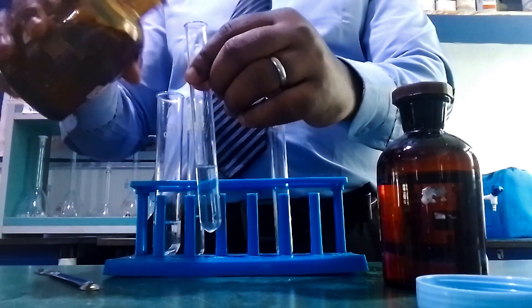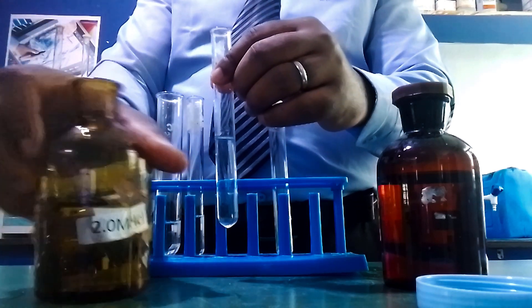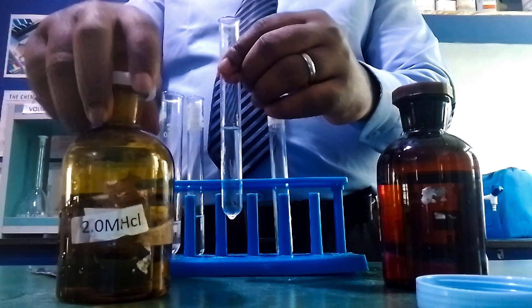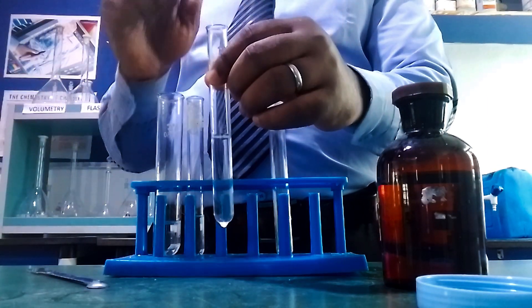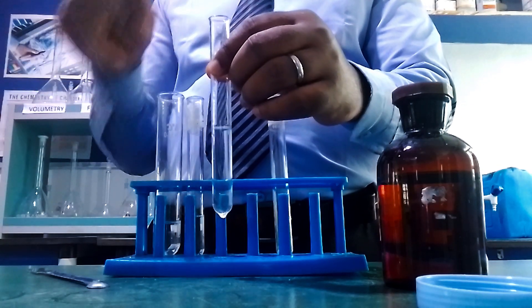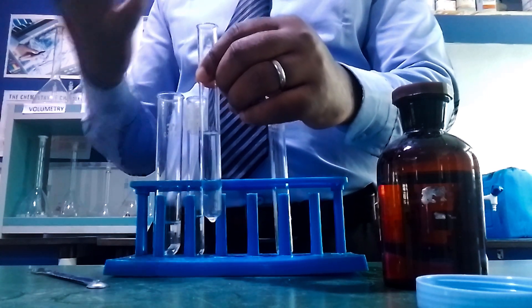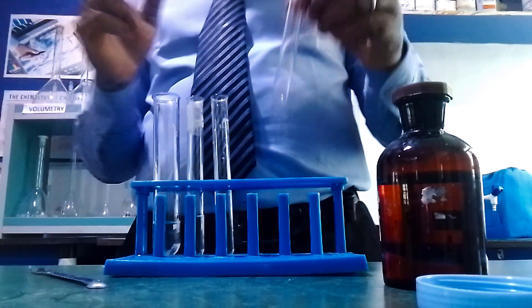You can see the precipitate dissolves when we add excess hydrochloric acid, which means this is either CO₃²⁻, SO₃²⁻, or S²⁻. But since the gas is odorless, it can only be CO₃²⁻. Now let's confirm.